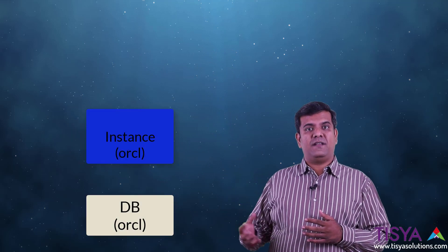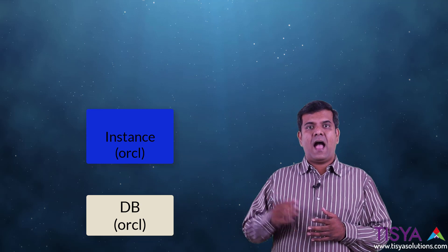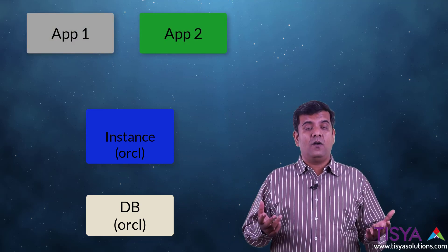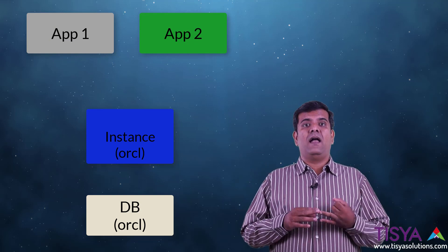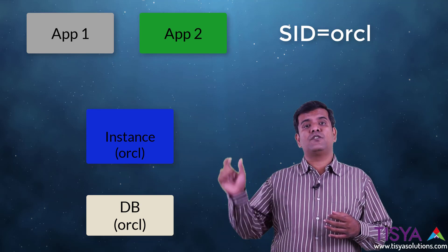To begin with, let's say we have a single instance database which means I have a single instance on a node and it connects to the database. I have two applications which need to connect to this. By default, we will give in the application connect string the hostname, port number and SID which is the instance name to which we will connect.